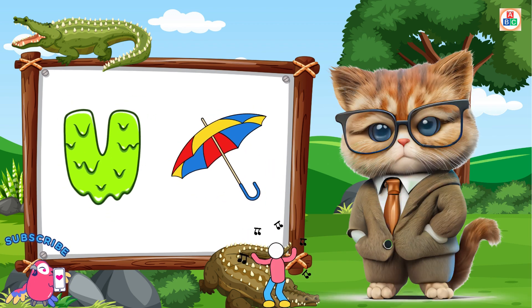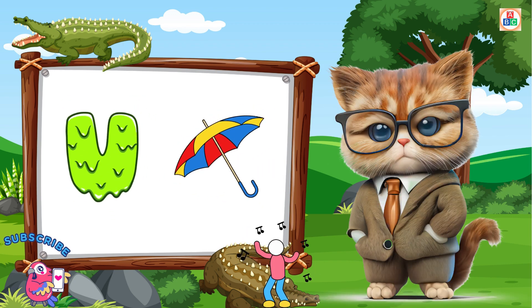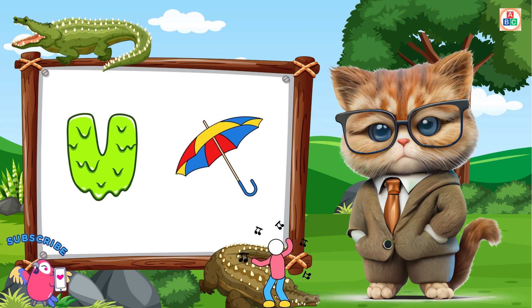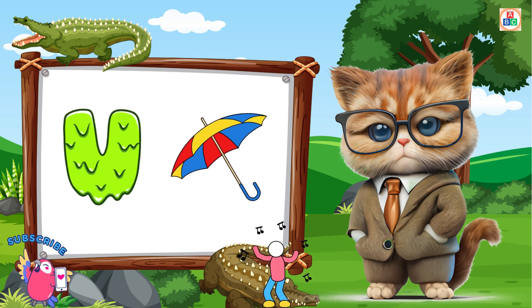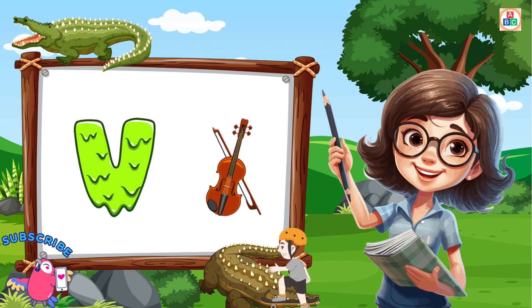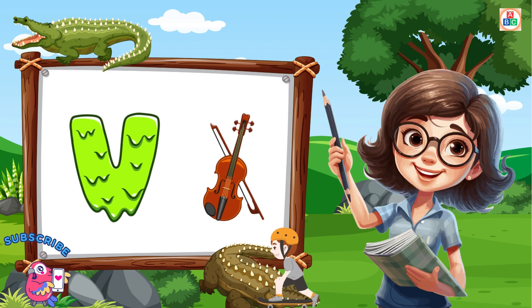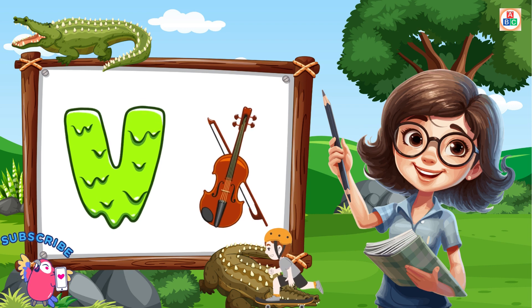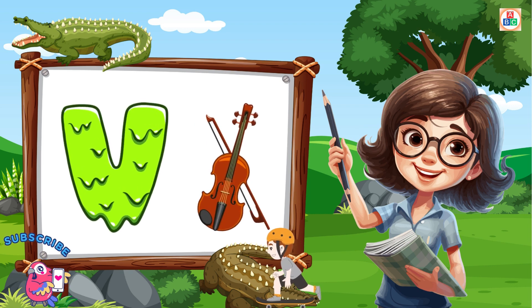U is for umbrella, u-u-umbrella. V is for violin, v-v-violin.